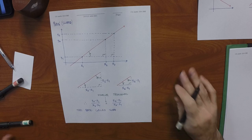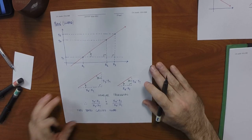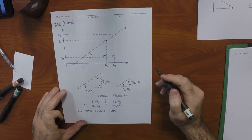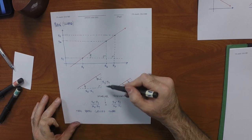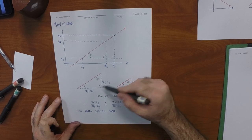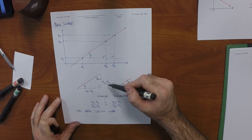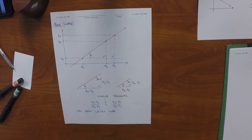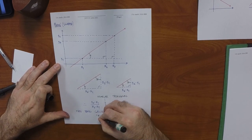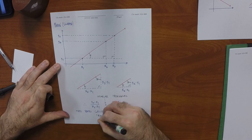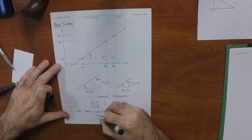When people do mathematics, this ratio is usually described using different names: the vertical measure is called the rise and the horizontal measure is called the run, which is the origin of the phrase 'slope is rise over run.'